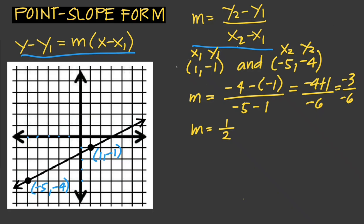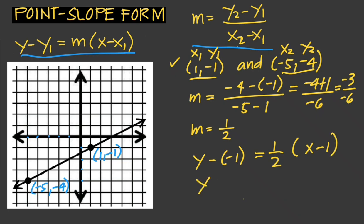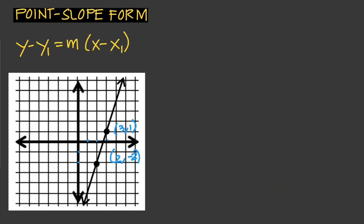Now we can write our equation in point-slope form. We can choose either of the two points — let's choose point (1, -1). The equation becomes: y - (-1) = 1/2 · (x - 1), which simplifies to y + 1 = 1/2(x - 1).